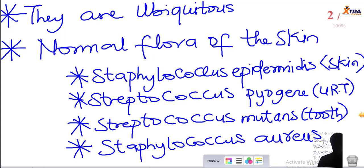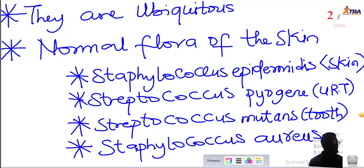Bacteria are said to be the only surviving prokaryotes, making them even older than the existence of man. The activity of planet Earth is intertwined with bacteria — they are essential for the planet's survival because they form the major class of decomposers. In ecology, decomposers break down dead plants and animals, releasing nutrients back into the nutrient cycle. Without them, those nutrients would be lost. In the next class, we will look at how we can classify bacteria.